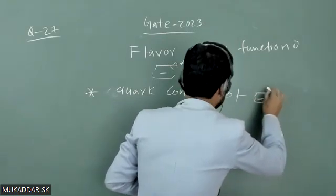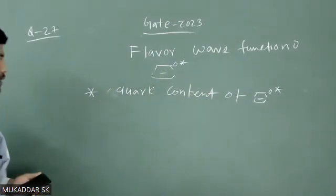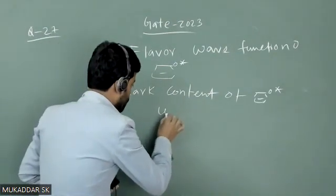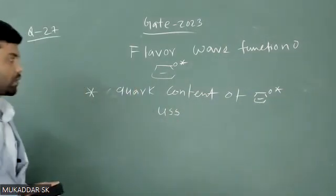cascade zero star. Its quark content is one up quark and two strange quarks, which we write as uss.